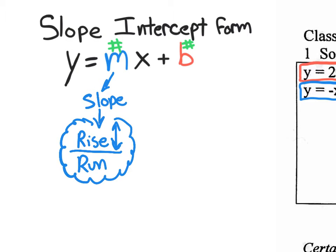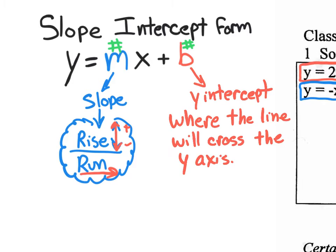The rise could go up or down depending on whether it's positive or negative. For the run, to avoid confusion when graphing, we're always going to go from left to right — it's always a positive run. The number over here (b) is the y-intercept, which is simply where the line crosses the y-axis.